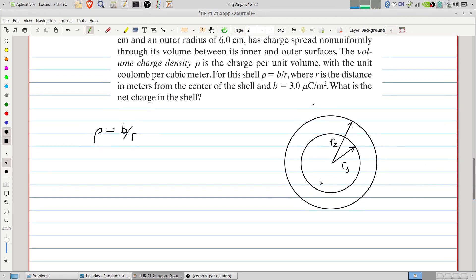If you want to compute the total charge, or the net charge, it's necessary to sum all the charge in the shell. In this case, as the charge varies continuously, it's necessary to integrate to obtain the net charge. The net charge will be the integral of the density in the volume.